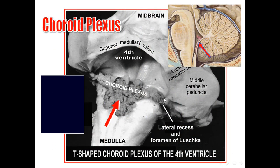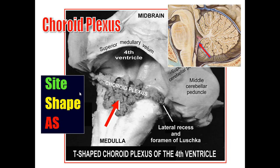The choroid plexus of the fourth ventricle: its location, shape, and arterial supply. It is attached to the inferior medullary velum. It is T-shaped, with a stem and two arms. The stem is attached to the inferior medullary velum, and each arm enters into the lateral recess and protrudes through the foramen of Luschka. It is supplied by a branch from the PICA (posterior inferior cerebellar artery).